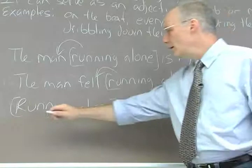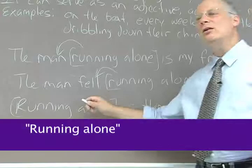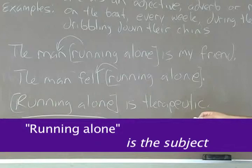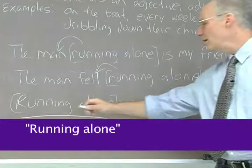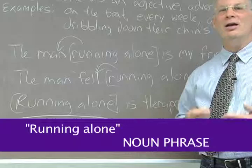In this sentence, running alone is therapeutic. Running alone is a thing. In this case, it's the subject of the sentence. It doesn't have a subject in itself. But in this particular sentence, that group of words is serving as the subject of the sentence. In this case, it's a noun phrase. It's not describing anything. It's a thing in itself. Running alone is therapeutic. Running alone is the subject of that sentence.